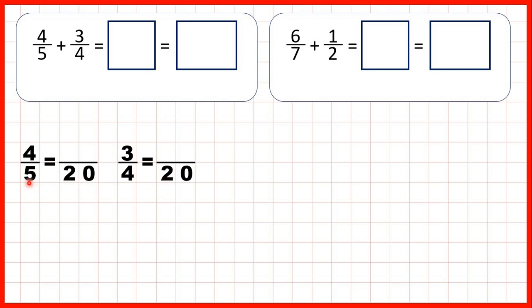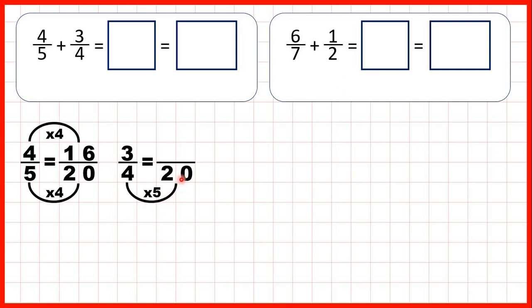We use multiplication to find equivalent fractions. Five times four is twenty, and we do the same to the numerator — four times four is sixteen. Now four times five is twenty and three times five is fifteen. So now that we have our equivalent fractions, we can rewrite our question.